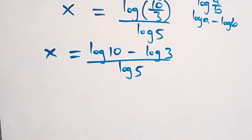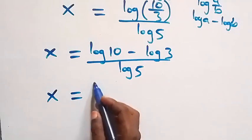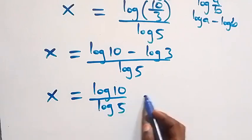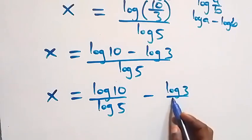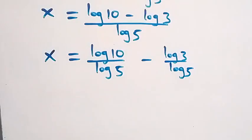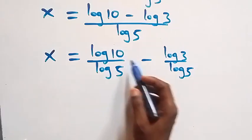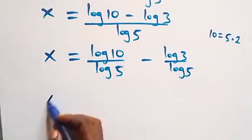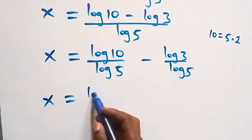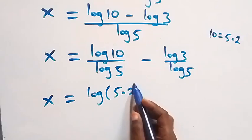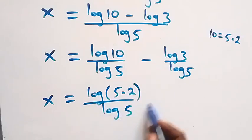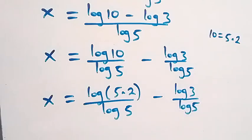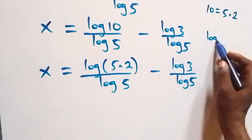We separate this into two fractions: x equals log 10 over log 5, minus log 3 over log 5. Now we write 10 as 5 times 2, so what we have becomes x equals log(5 times 2) over log 5, minus log 3 over log 5. Applying the product rule, log(a times b) equals log a plus log b.